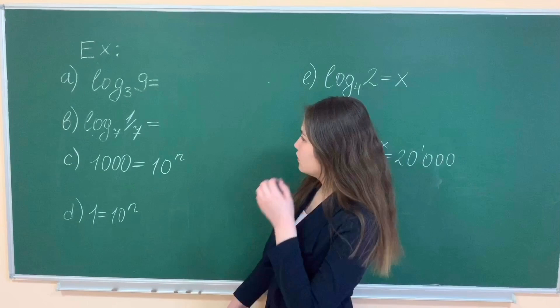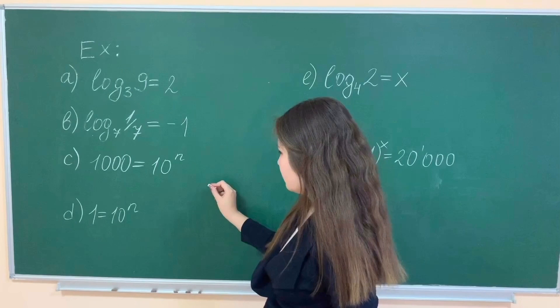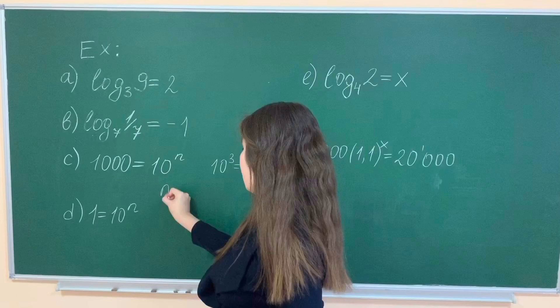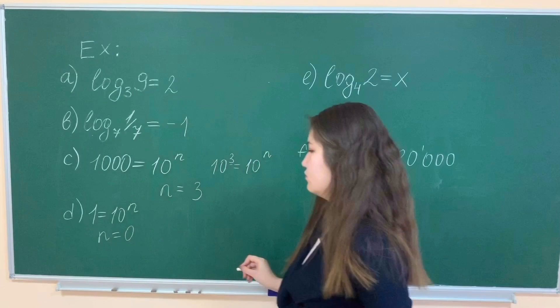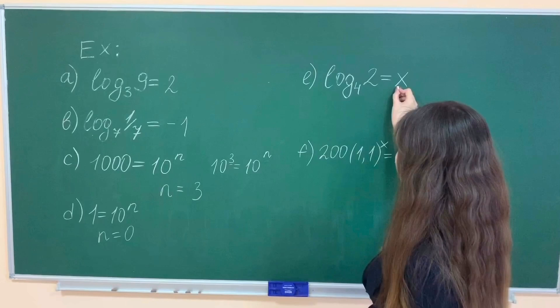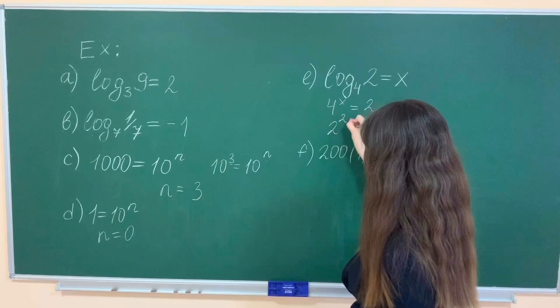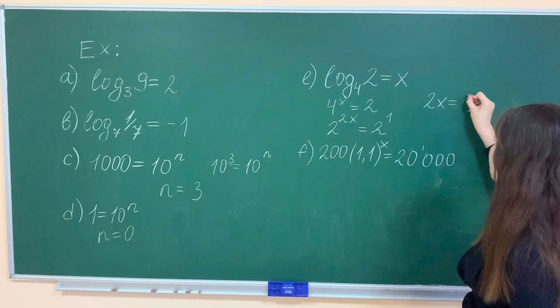All logarithms obey the rules. Answer is 2 because 3 in second degree is exactly 9. Part c: 1,000 equals 10^n, write one thousand as 10 in third degree, answer is 3. Part d: 1 equals 10^n, n equals 0. Part e: If 10^x equals 2, here we have first degree, answer is one-half.